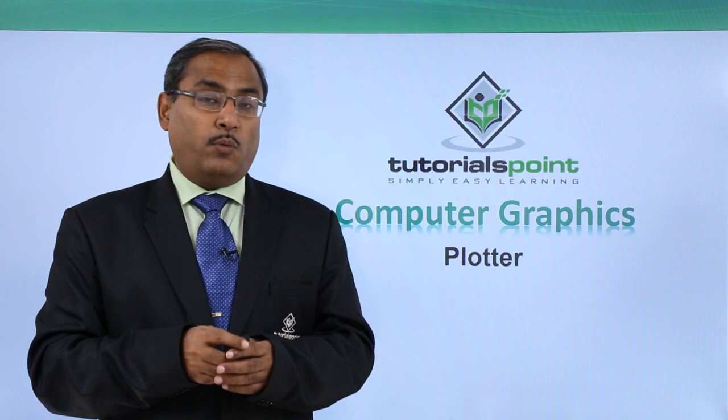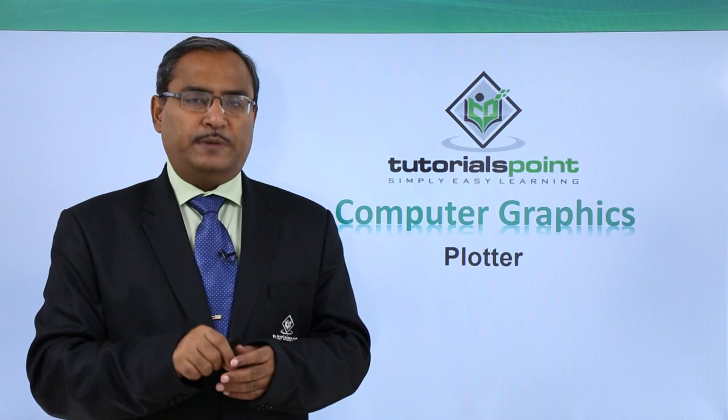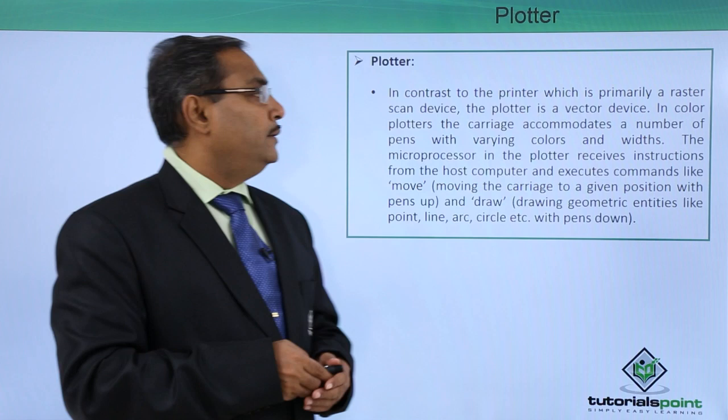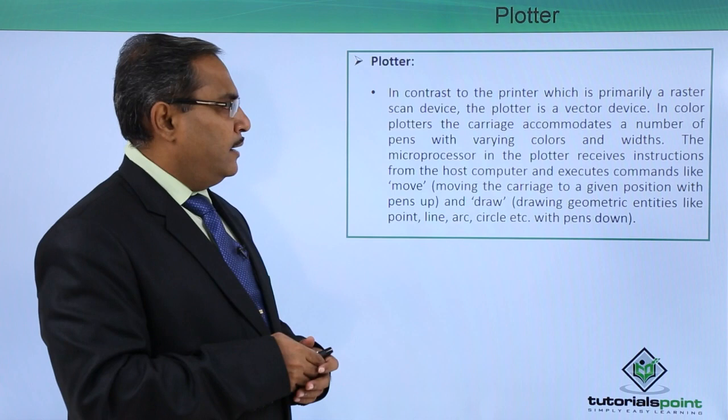But in this plotter it is a vector scan. What is the vector scan? Here printing will be done directly — it will go to those positions on the page and go on drawing the respective diagrams. It will not scan the full page area. That is known as vector scan, and printers follow the raster scan. In contrast to the printer which is primarily a raster scan device, the plotter is a vector scan device.